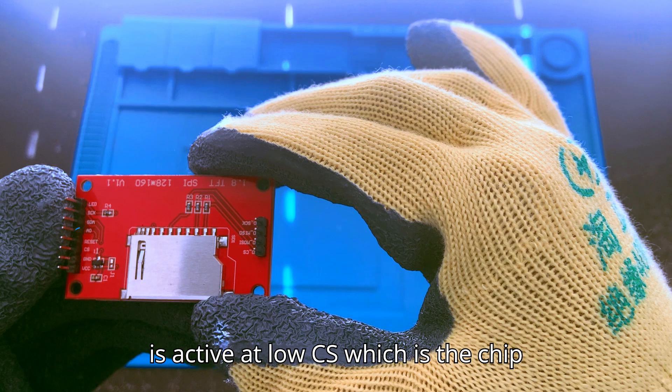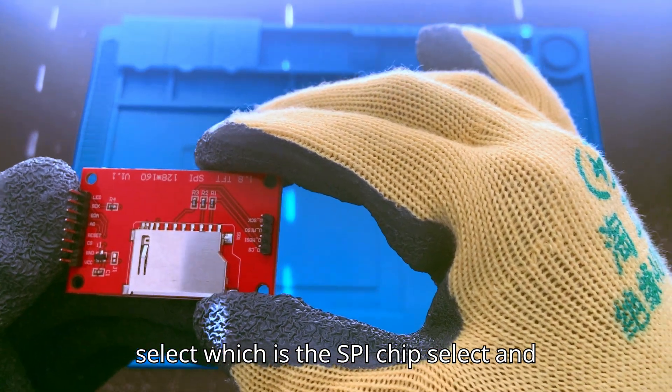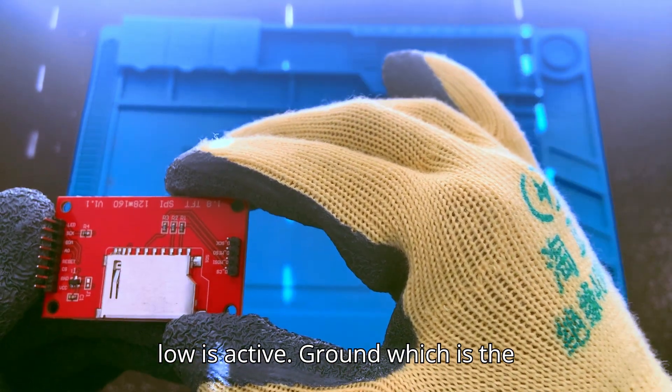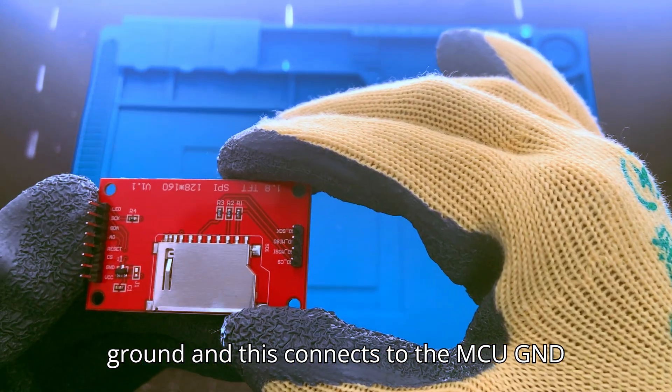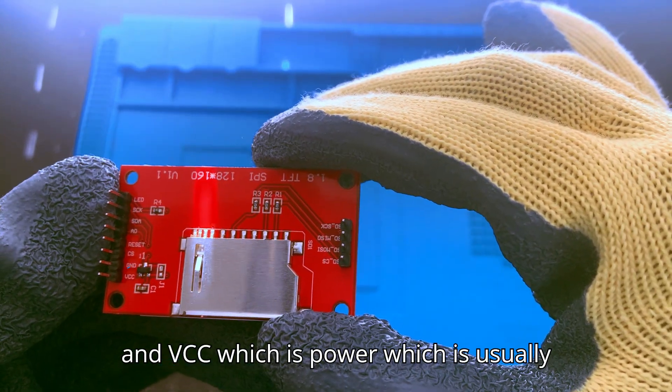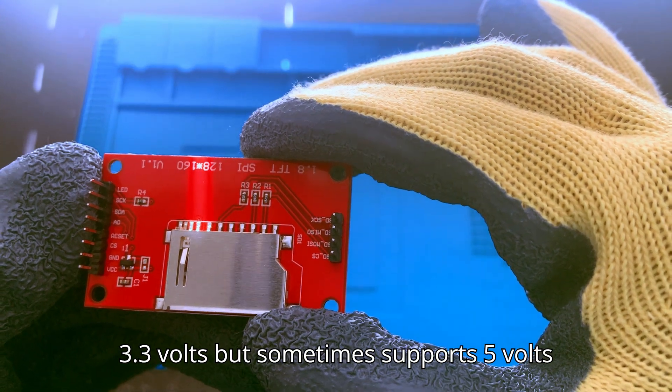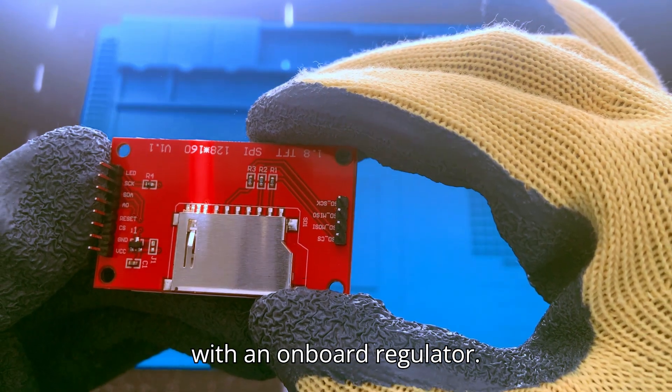CS, which is the chip select, is the SPI chip select, and low is active. Ground connects to the MCU ground. And VCC, which is power, is usually 3.3 volts, but sometimes supports 5 volts with an onboard regulator.